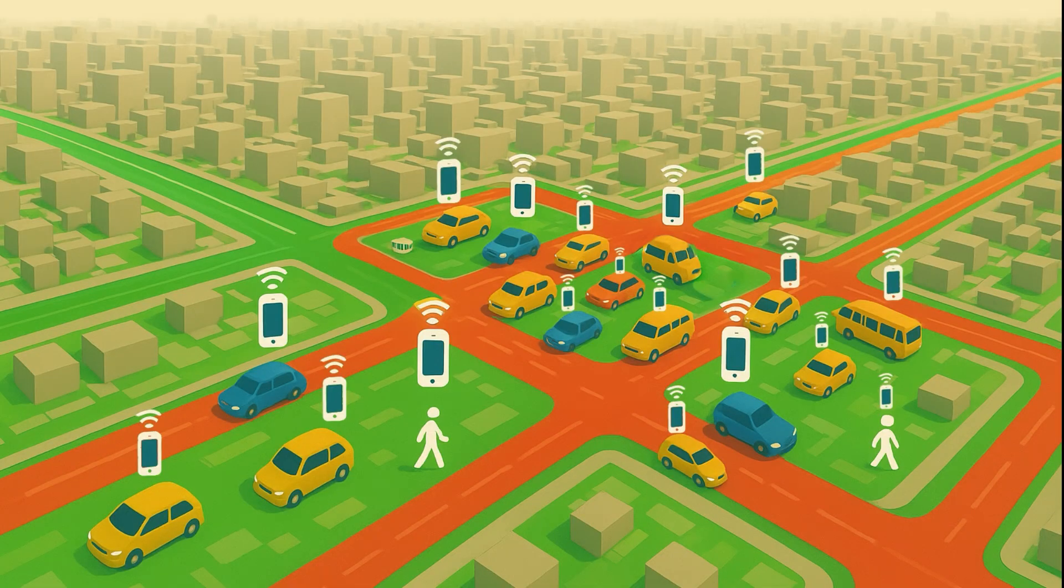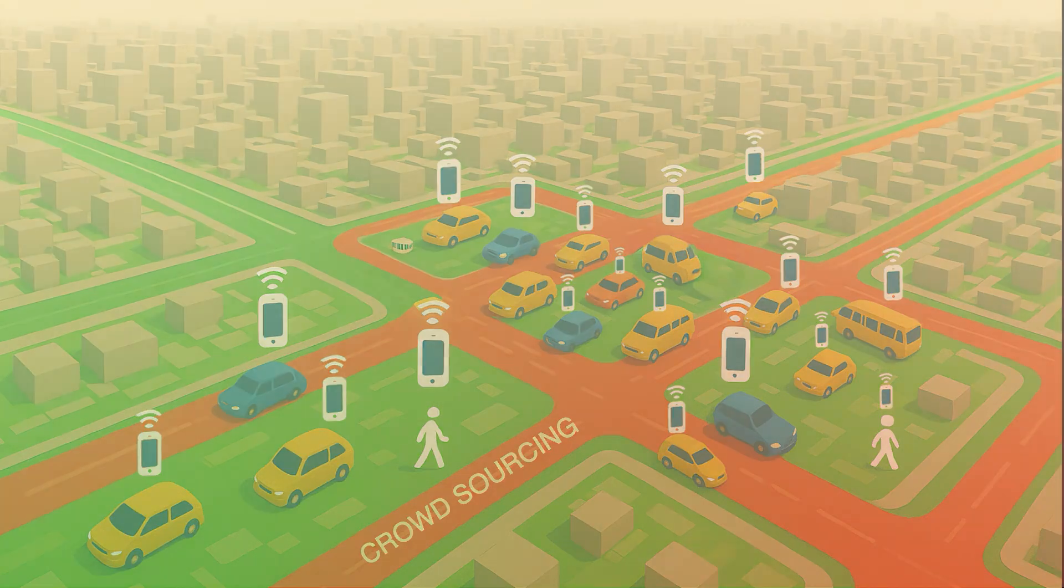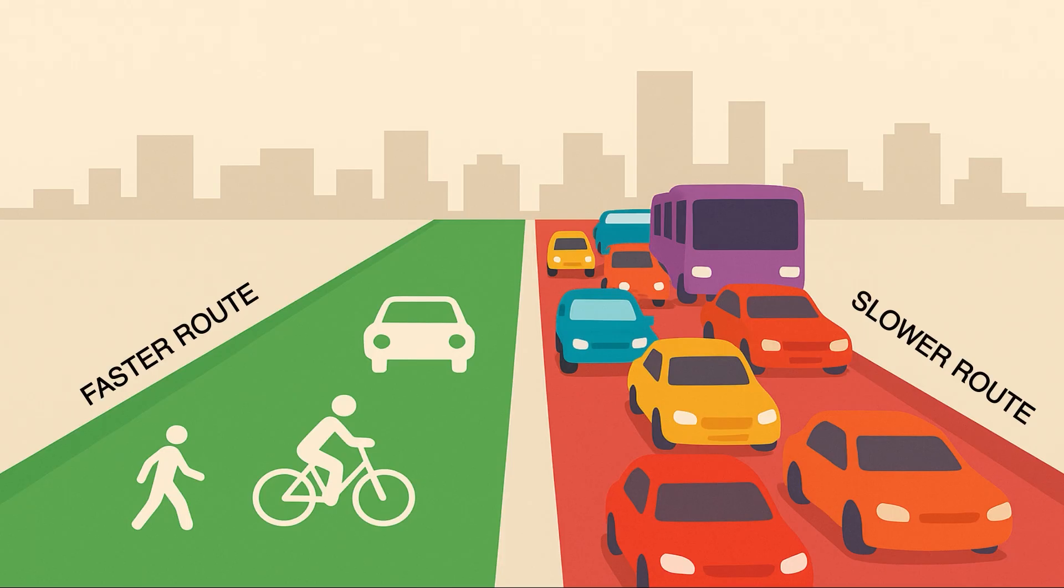That's why Google Maps and other modern navigation systems use variations of A star and other smart algorithms to get you there faster. Now that we know the shortest route, Google Maps has another trick up its sleeve, real-time traffic. Maps collects anonymous location data from millions of phones. If a lot of devices are moving slower than expected on a road, that road turns orange or red. That's how Maps can reroute you on the fly. Not just finding the shortest distance, but the fastest route right now.